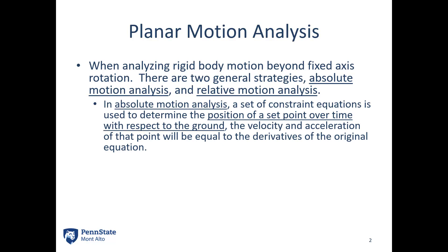In absolute motion analysis, we have a set of constraint equations to determine the position of a set point over time with respect to ground. Once we have that position equation, we take the derivative to find velocity and the derivative again to find acceleration of that point. So we're using calculus on our position and velocity equations.